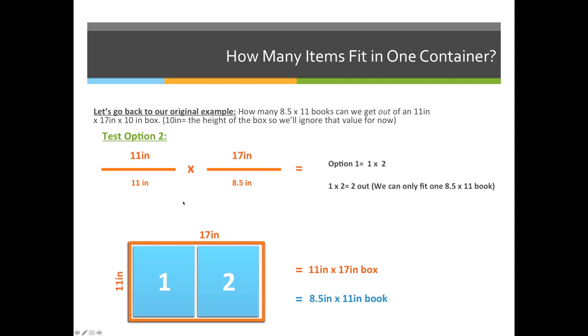So 11 divided by 11 is 1, and 17 divided by 8.5 is 2. So 1 times 2 is 2. So if we turn the book 90 degrees, put them up on their side, we can fit two books into our 11 by 17 inch box.